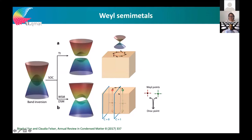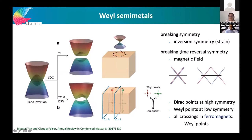Between Weyl points our crystal is topological and we have Fermi arcs as surface states, which are the signature of Weyl semimetals. We can turn a Dirac crossing — a four-times degenerate point — into Weyl crossings. If you see the spin polarization as color red and blue, you understand how the chirality comes from the spin of the bands. If you break time reversal symmetry, every crossing point in every ferromagnet becomes a Weyl point.